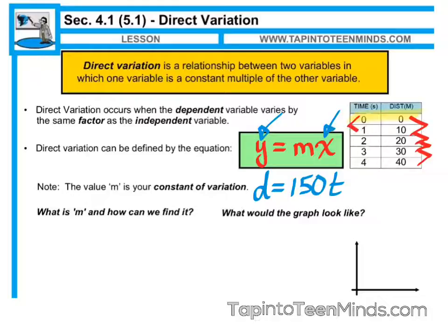As our x value goes up by 1, our y value in this case goes up by 10. And that means that our constant of variation is going to be 10. And our equation in this scenario would be y equals 10 times x.